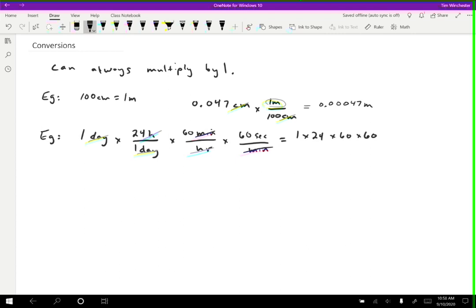And that tells me how many seconds are in a day because seconds are the only unit that hasn't canceled out. And then if I plug that into a calculator, then I get 86,400 seconds. So that's how many seconds are in a day.